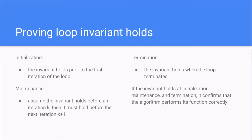Proving loop invariant holds. At initialization, we must prove the invariant holds prior to the first iteration of the loop. At maintenance, we assume the invariant holds before an iteration k, then it must hold before the next iteration k plus 1. At termination, we must prove the invariant holds when the loop terminates.